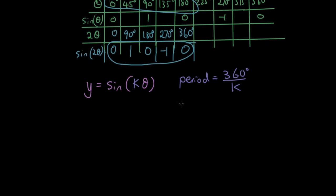Now if you're working in radians, in radians the period would be 2π over K if you're working in radians. Same thing, because 360 degrees is 2π.